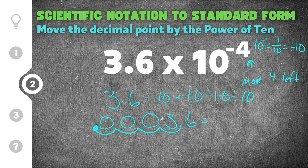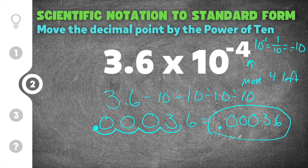Our final solution is 0.00036. Back at the beginning of the video I mentioned that a negative exponent gives us a small number — that's another helpful way to remind yourself which way to move the decimal. If you have a negative exponent on a power of 10, you'll always end up with a very small decimal. So 3.6 times 10 to the negative fourth becomes 0.00036 in standard form.